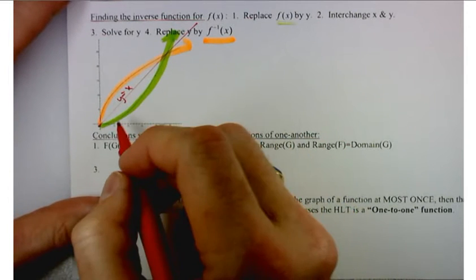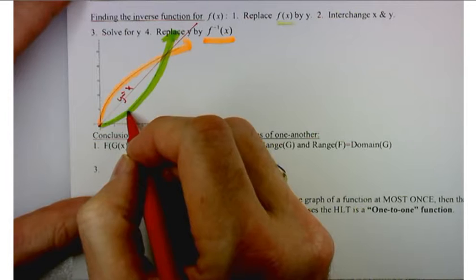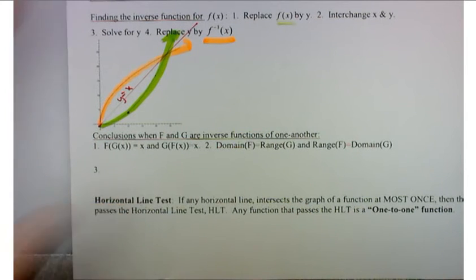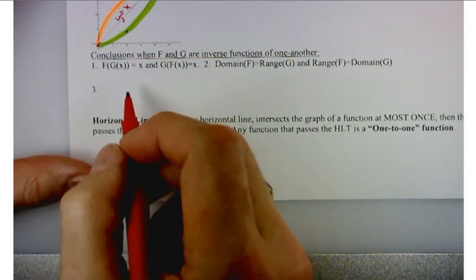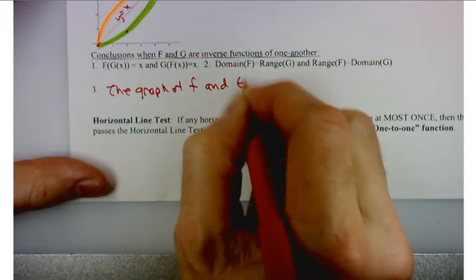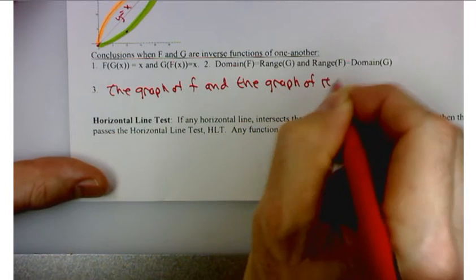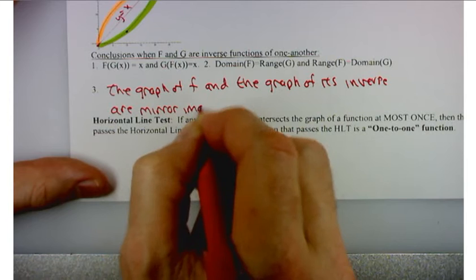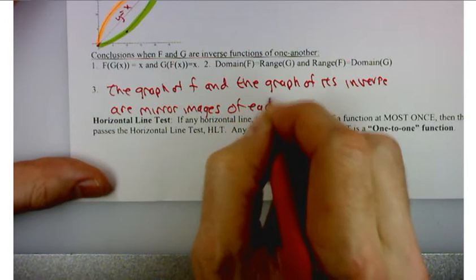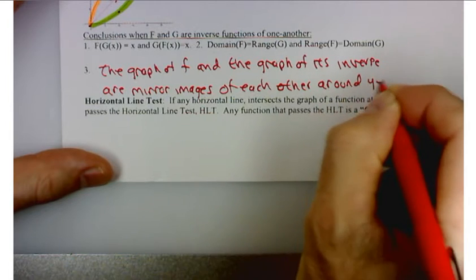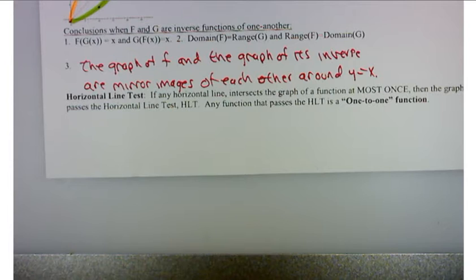Basically, what's going to happen is that your graph of your function and your graph of inverse are going to be mirror images around this line y equals x. That's simply because you're interchanging values of x and y. Instead of having a point at, say, 10 and 4.1, you're going to have a point at 4.1 and 10. So it's just going to interchange those two values. That's one of the conclusions that I want you to have based on this handout: the graph of f and the graph of its inverse are mirror images of each other around the line y equals x.